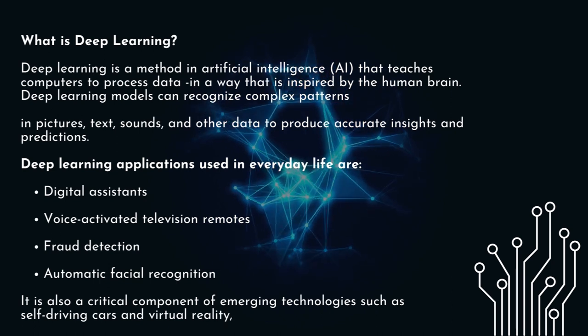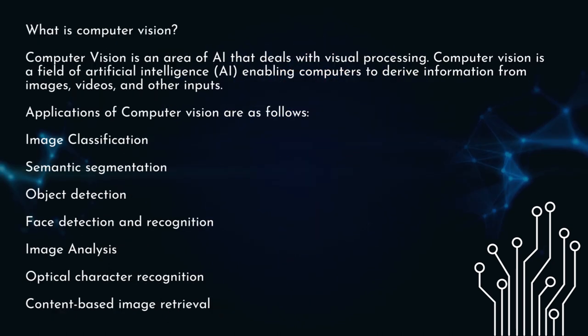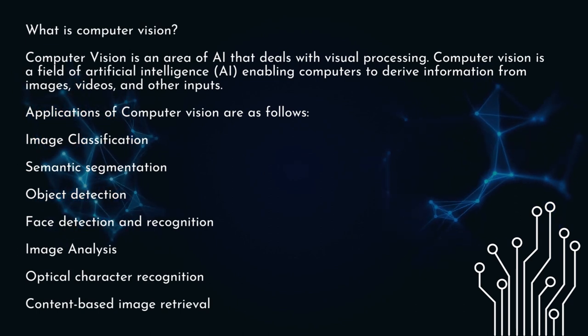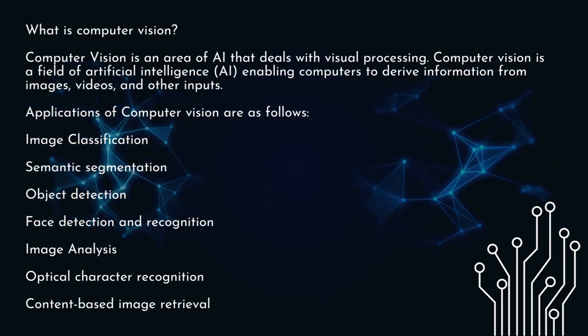What is computer vision? Computer vision is an area of AI that deals with visual processing. Computer vision is a field of artificial intelligence enabling computers to derive information from images, videos, and other inputs.